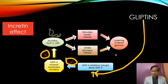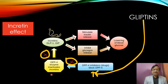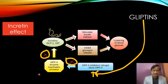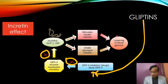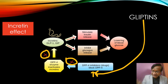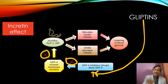Incretins act to stimulate insulin and inhibit glucagon release, thus lowering glucose. However, there are enzymes — Dipeptidyl Peptidase-4 (DPP-4) — which break down these incretins. DPP-4 inhibitors block this enzyme, so incretins are increased. This stimulates insulin release and lowers blood glucose. These drugs are called Gliptins.